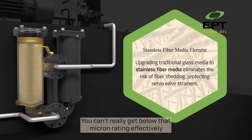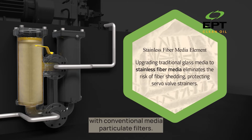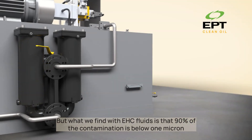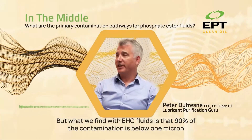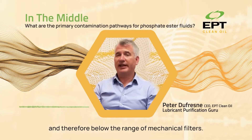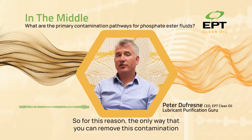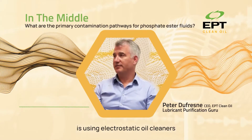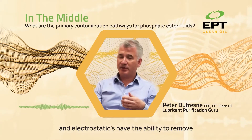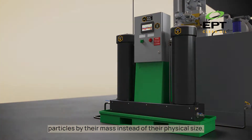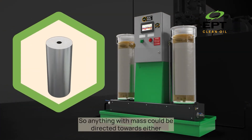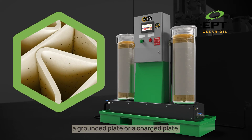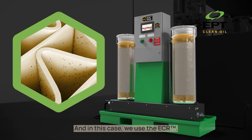You can't really get below that micron rating effectively with conventional media particulate filters. What we find in EHC fluids is that 90% of the contamination is below 1 micron and therefore below the range of mechanical filters. For this reason, the only way to remove this contamination is using electrostatic oil cleaners. Electrostatics have the ability to remove particles by their mass instead of their physical size, so anything with mass can be directed towards either a grounded plate or a charged plate. In this case, we use the ECR.